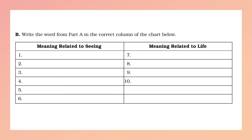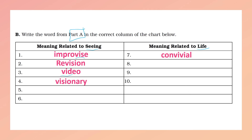Practice B: write the word from Part A in the correct column of the chart below. We have to write here the words that are related to 'seeing' and here words related to 'life,' by knowing the word roots we used. For example, for 'seeing' we have: improvise — this root — revision, video, visionary. For 'life,' I will leave five and six for you: convivial. We have revive. Try to complete and add four more — two for seeing and two for life.